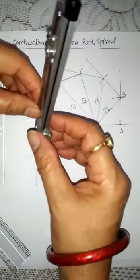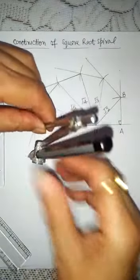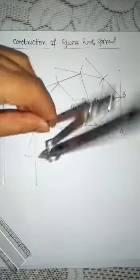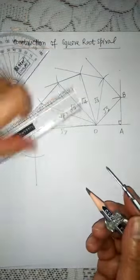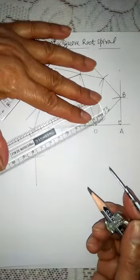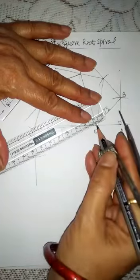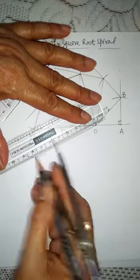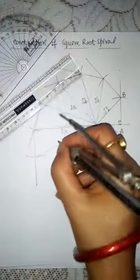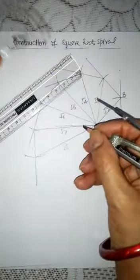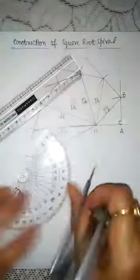Cut it. We are getting it, children. Then join again — this will be root 8. Again make 90 degree.